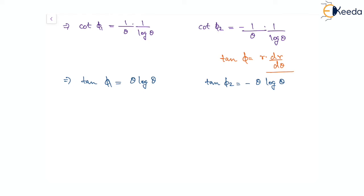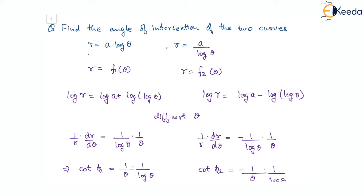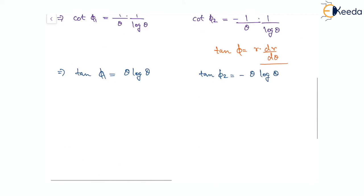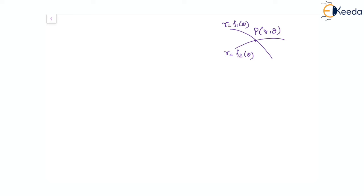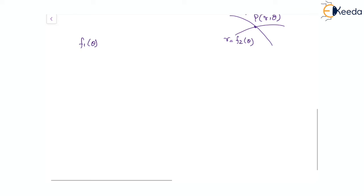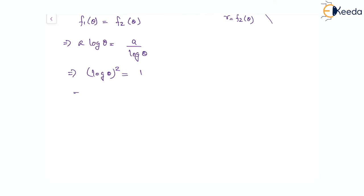So we need to find the value of θ, and then we will be in a position to solve for tan(φ₂ − φ₁). Going back to the polar curves: one curve is r equal to a·log θ and the other is r equal to a by log θ. At the point of intersection the same point satisfies both equations, so f₁(θ) must equal f₂(θ). That gives a·log θ equal to a by log θ, so log²θ equal to 1, meaning log θ equal to 1, and therefore θ equal to e.